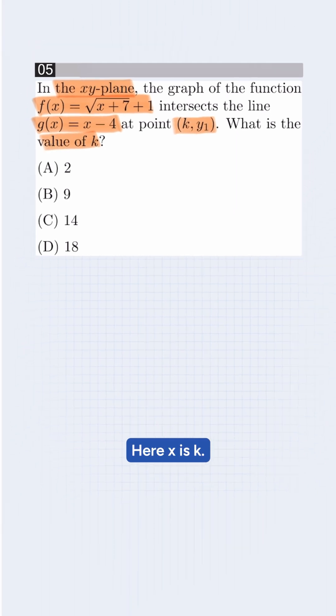Here, x is k. We first define the x-coordinate of the point of intersection. We set f(x) is equal to g(x).